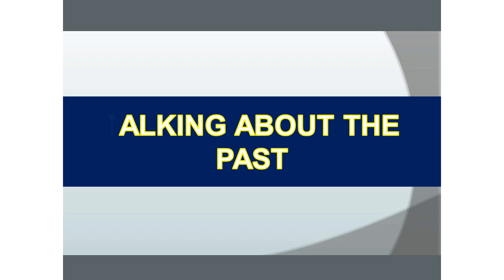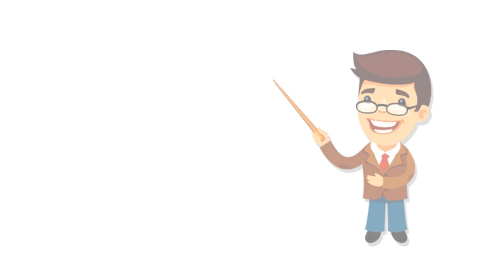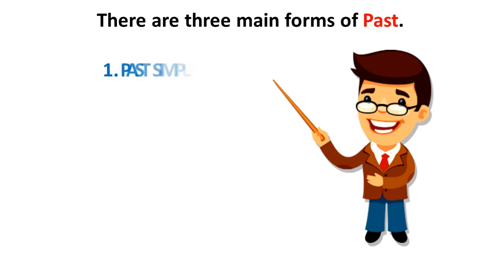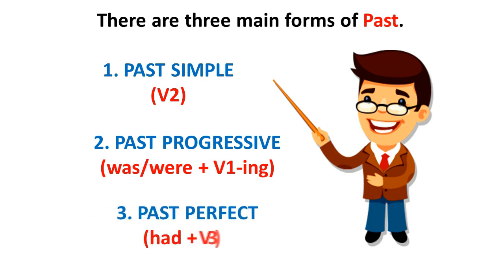Talking about the past. There are three main forms of past tense: Past Simple (V2), Past Progressive (was/were + V1-ing), and Past Perfect (had + V3).